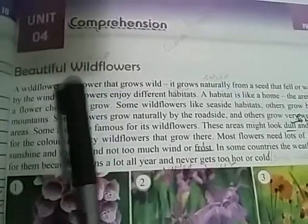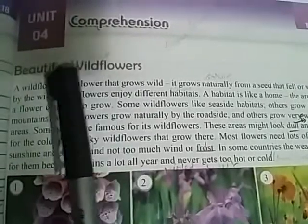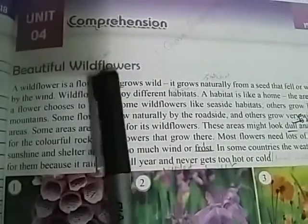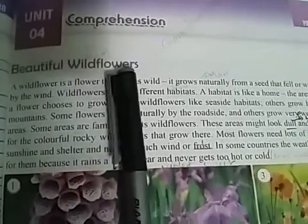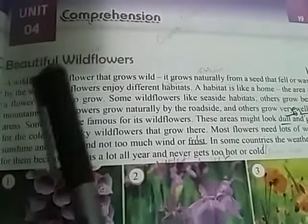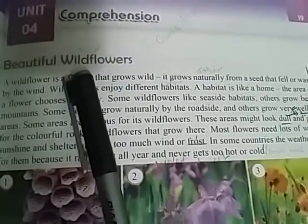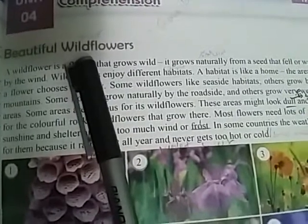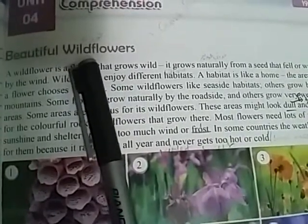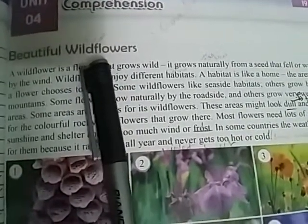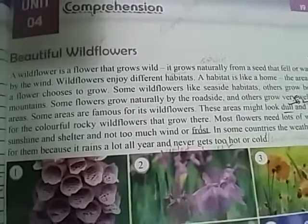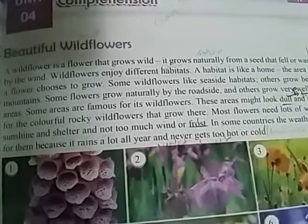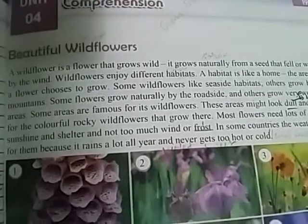The name of the unit is 'Beautiful Wild Flowers.' Beautiful means khubsoorat (خوبصورت). Wild flowers means khudrau phool (خودرو پھول). Wild can mean jungle, but here we are not supposed to take it in the sense of jungle. Its meaning here is khudrau phool — flowers that grow on their own.